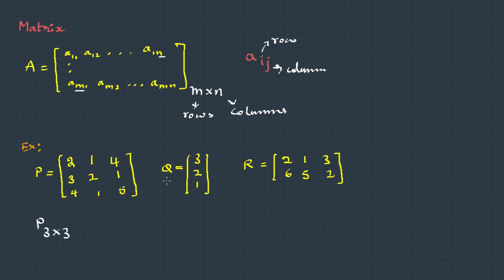Look at Q. Q has three rows and one single column. Therefore, we're going to write Q as 3 by 1. On the same lines, R will be 2 by 3 because it has two rows and three columns.